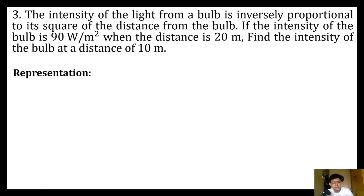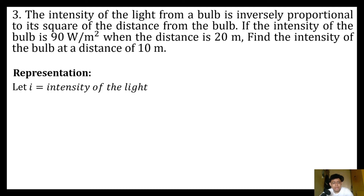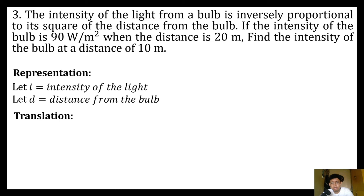First, let's identify the variables present in our word problem. Our variables will be the intensity of the light from a bulb and the distance from the bulb. Let i be equal to the intensity of the light, and let d be equal to the distance from the bulb. Since we use the phrase 'inversely proportional,' we will be dealing with inverse variation. The intensity i is equal to the constant of variation divided by the square of the distance: i = k over d².